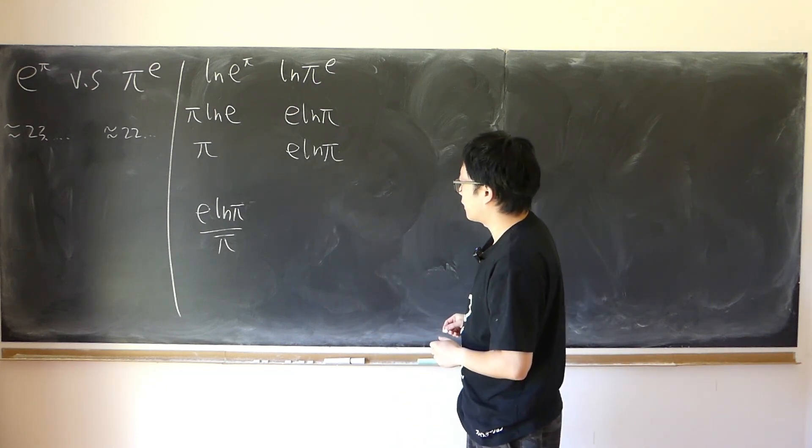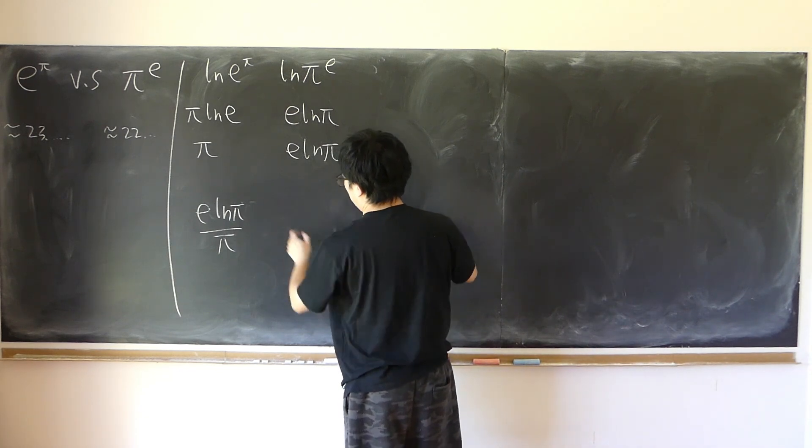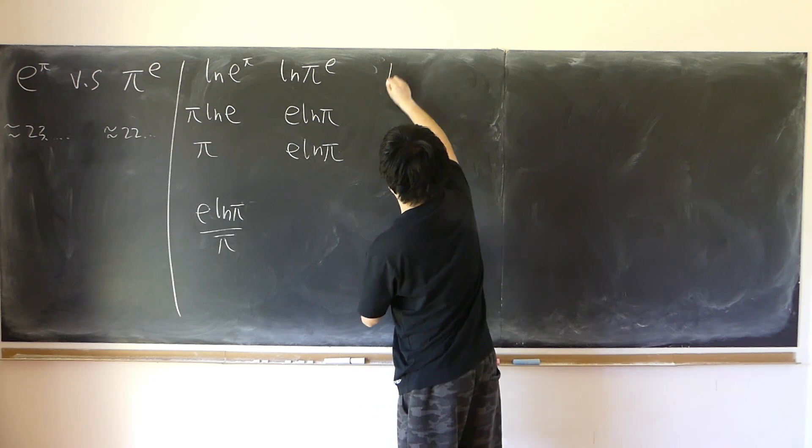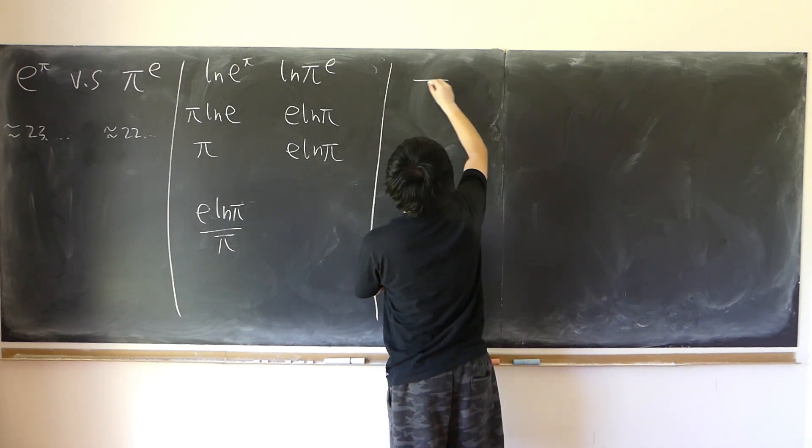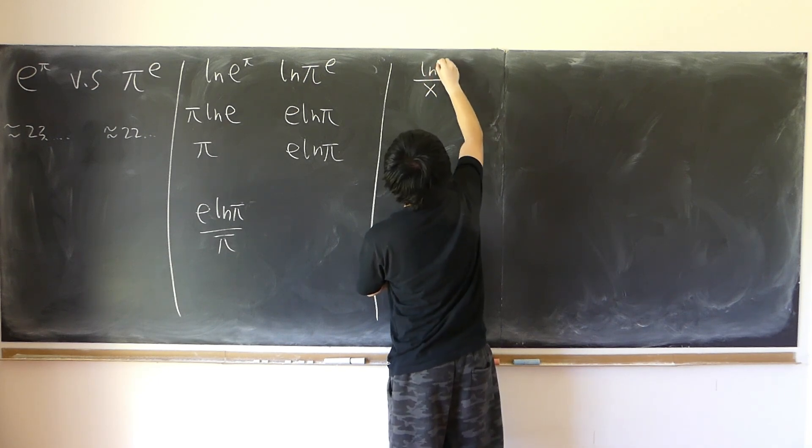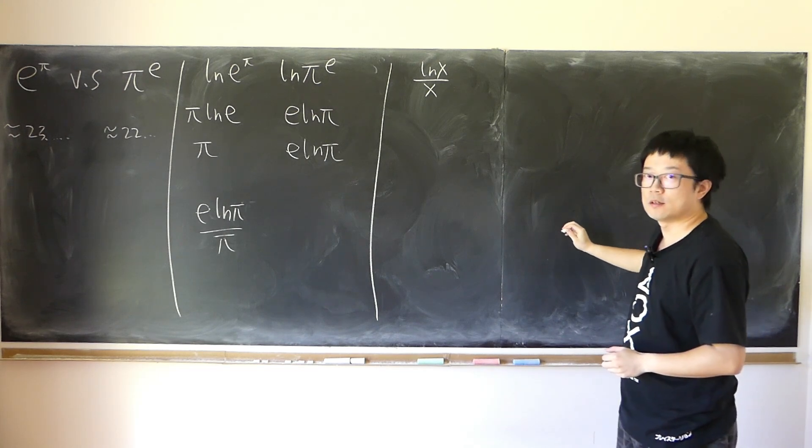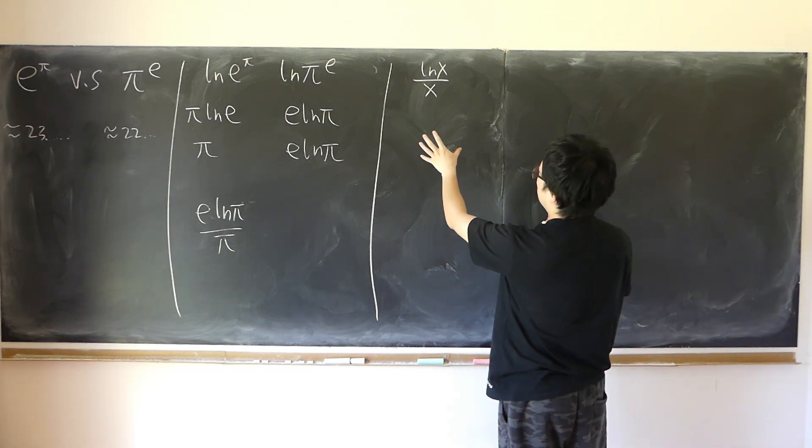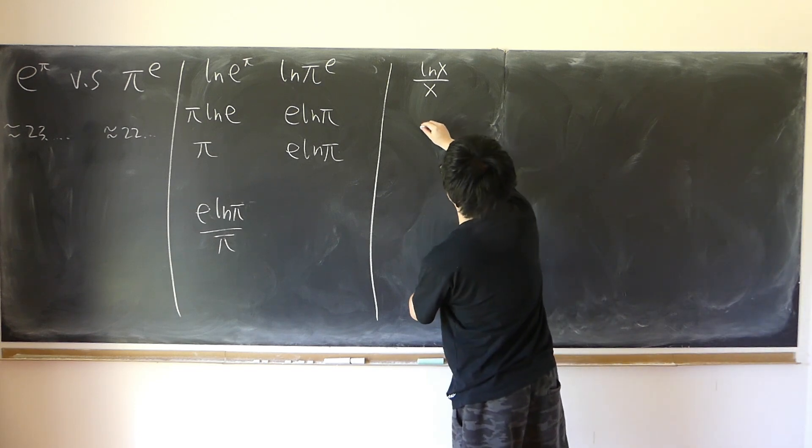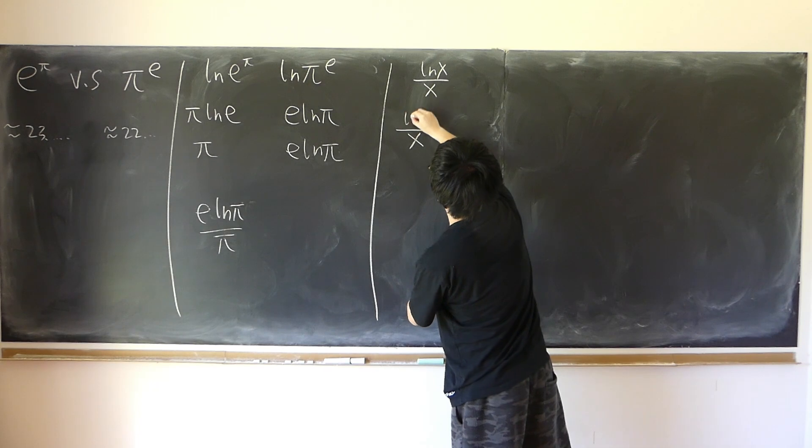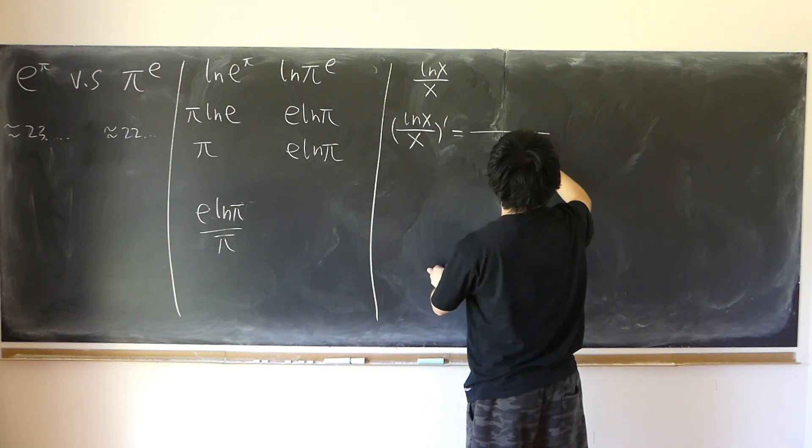So, the fact that we both have pi down here and pi up here, that motivates us to construct the following function: log x over x. And this function, can we perhaps find its minimum or maximum? Find out its derivative maybe.